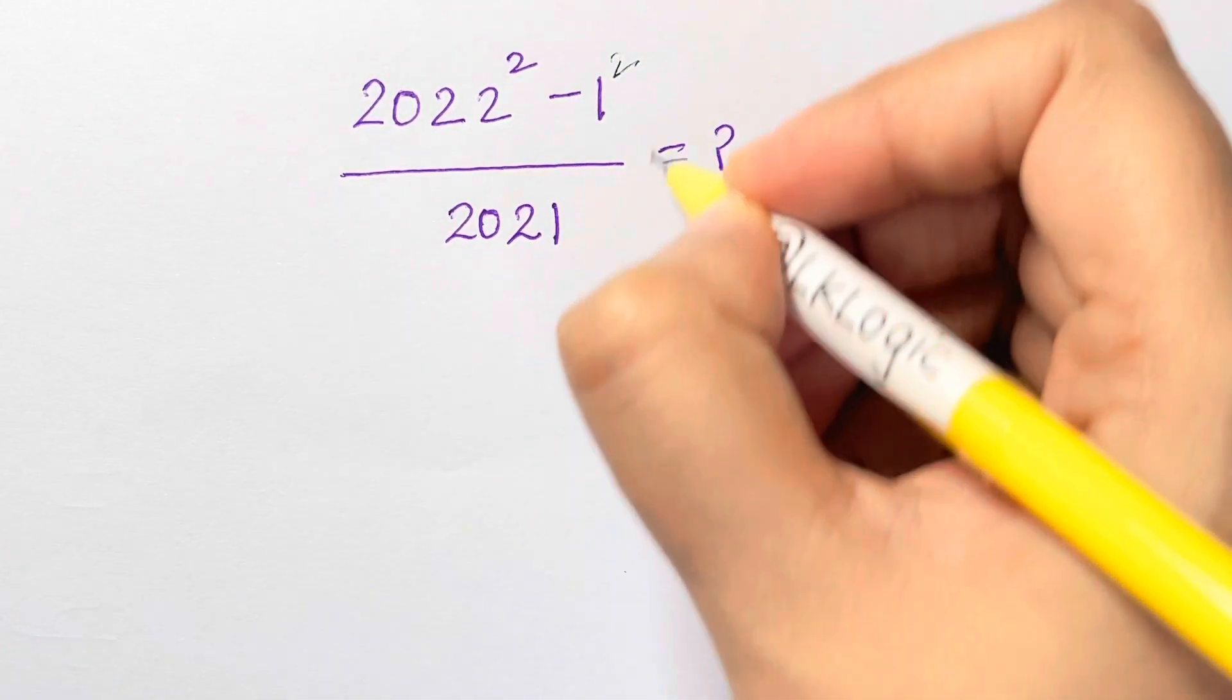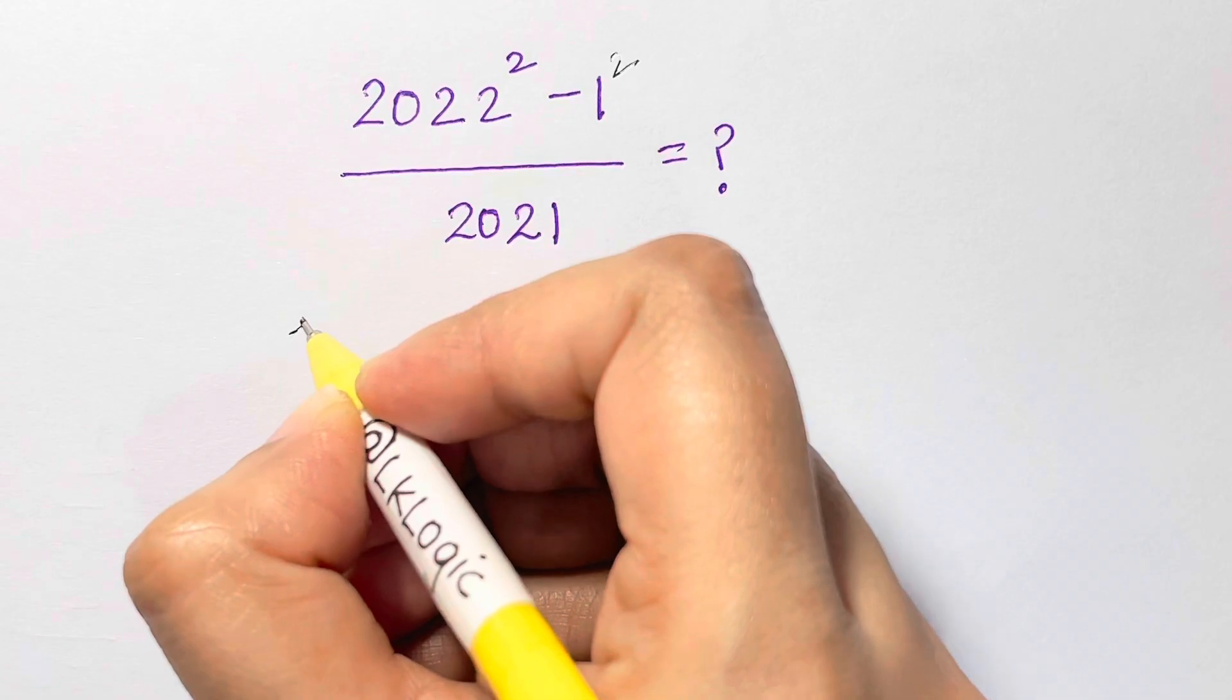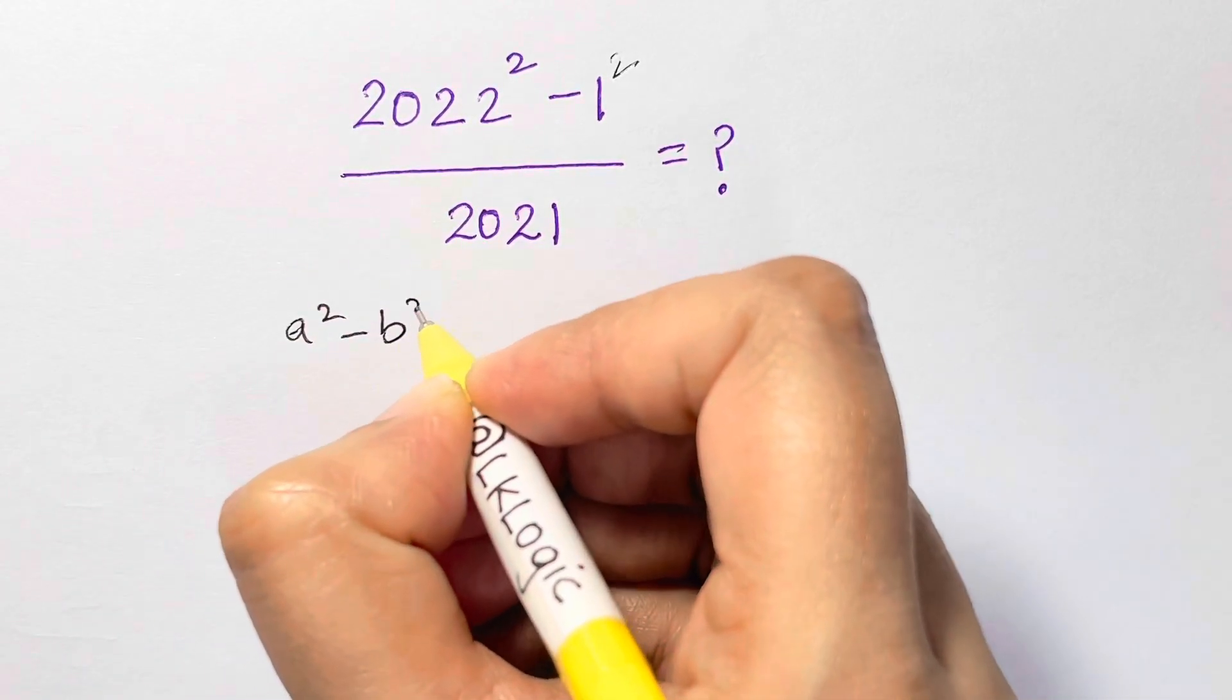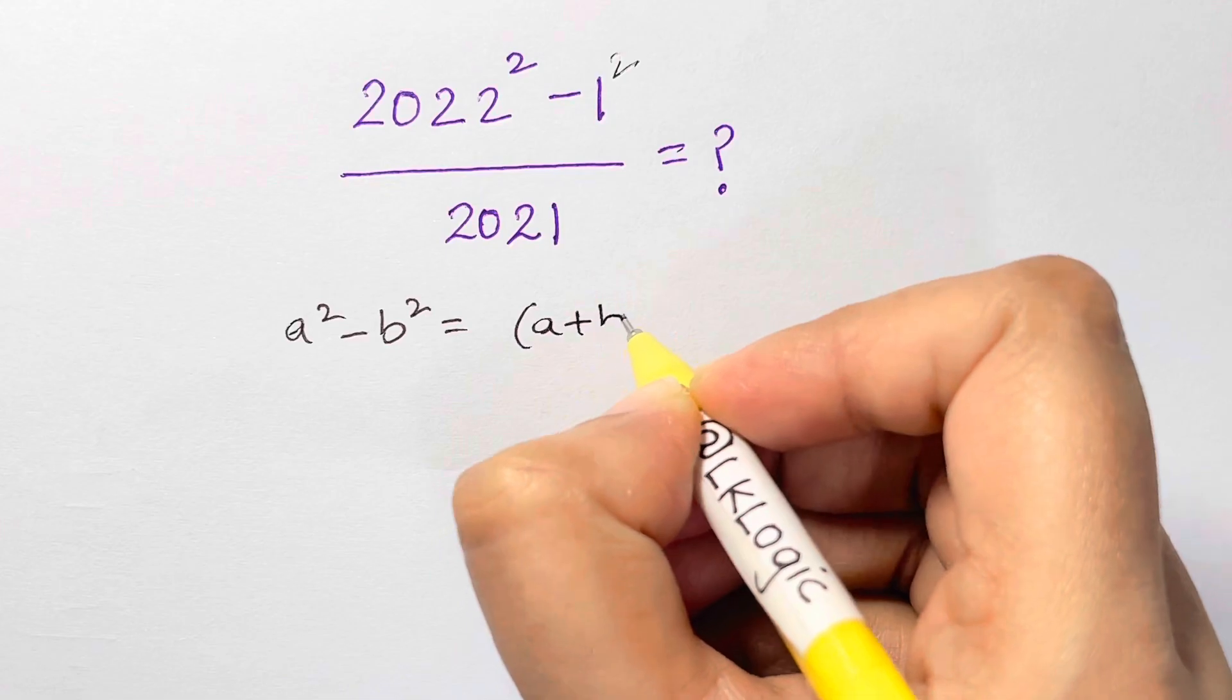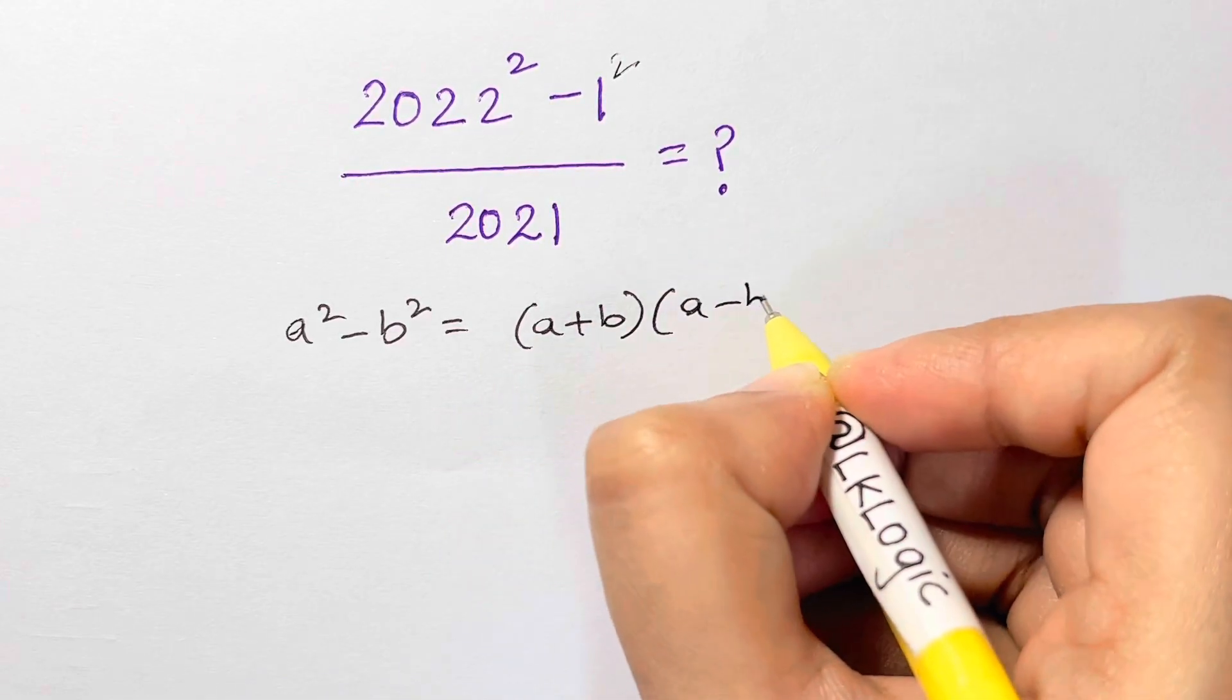Now if you see, you'll find an identity. What identity? A square minus B square. And what's that? A plus B times A minus B.